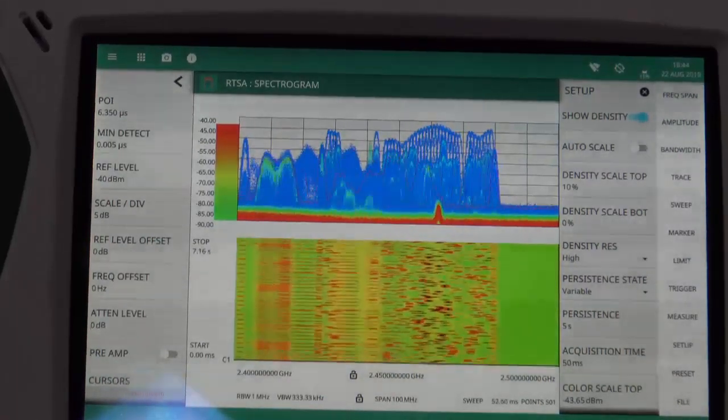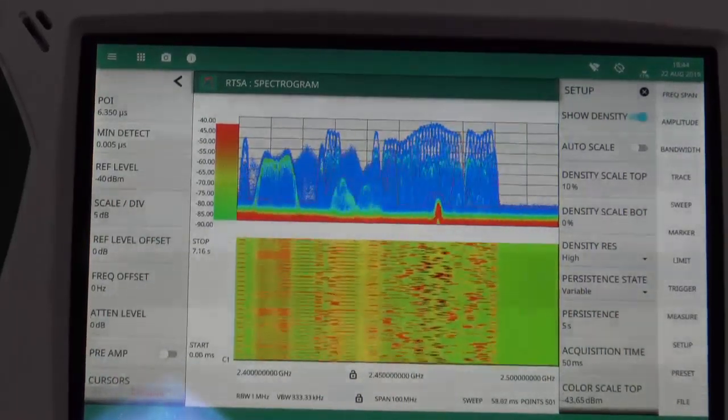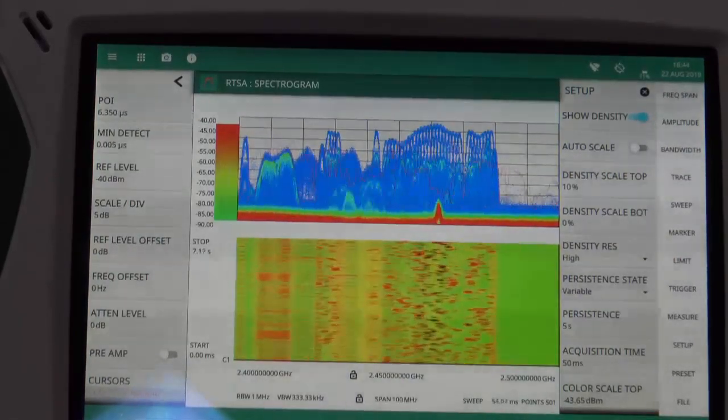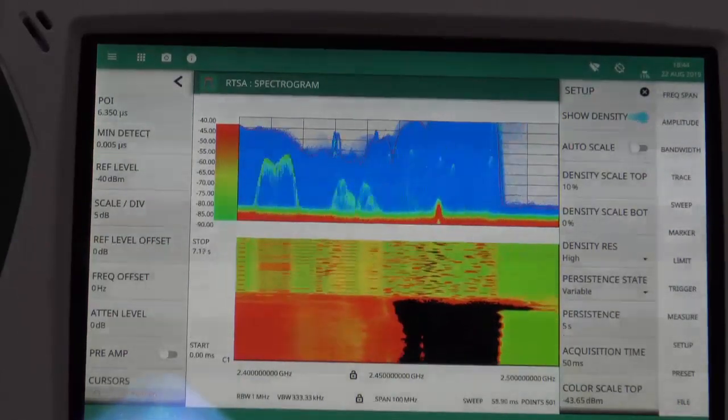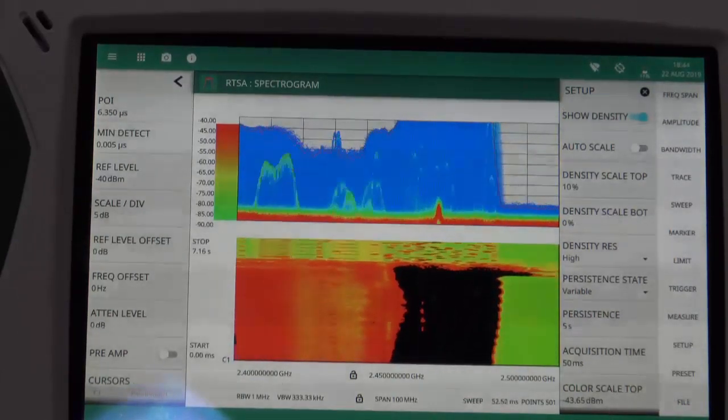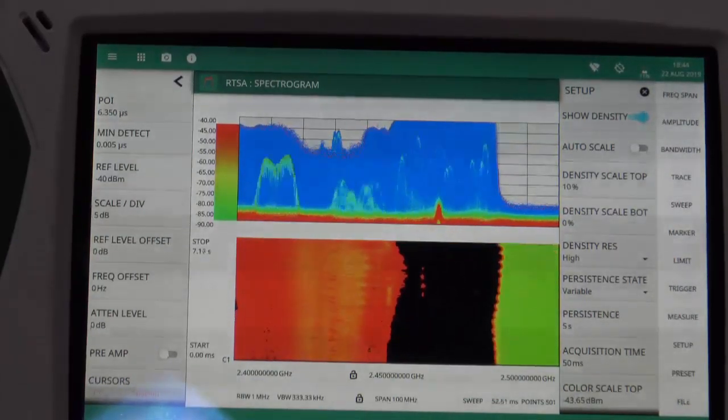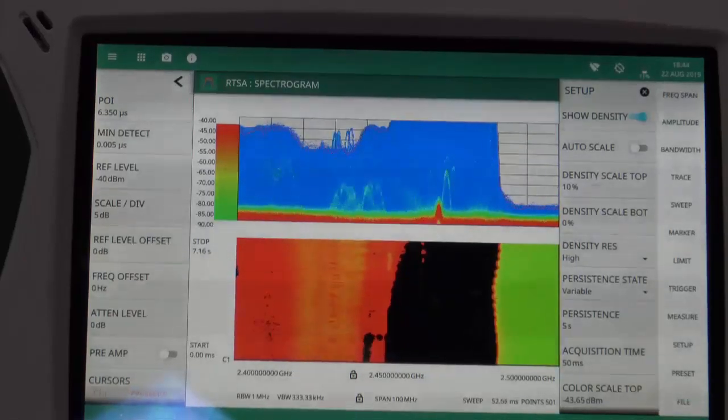What I'm now going to do is turn on a microwave oven and when I turn on the microwave oven, we can see just how much power radiates from the microwave oven making it very difficult for other signals in the ISM band to maintain communication.